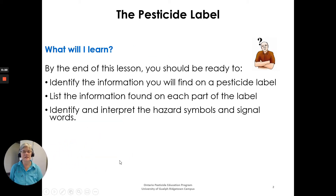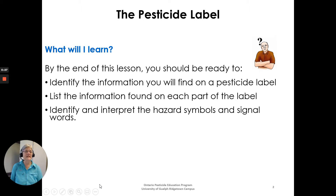By the end of this lesson you should be able to identify the information you will find on a pesticide label, list information found on each part of a label, and identify and interpret the hazard symbols and signal words you'd find on a label.